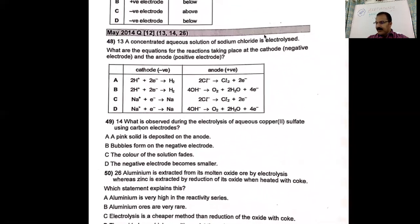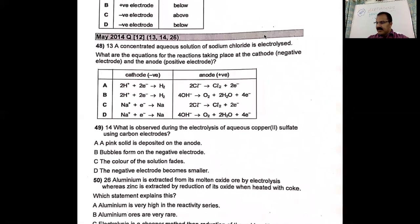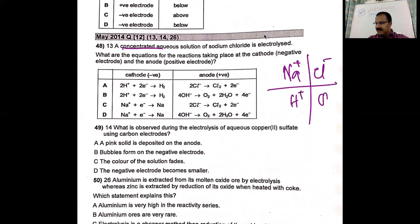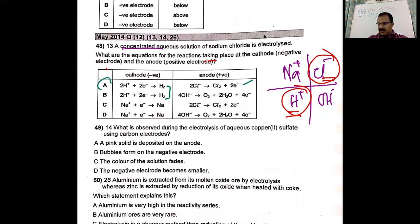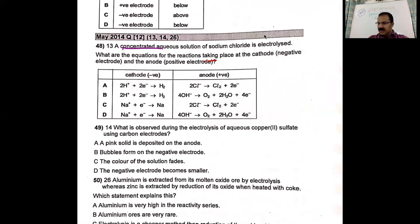Question 48: a concentrated aqueous solution of sodium chloride is electrolyzed. Na⁺, Cl⁻ from sodium chloride; H⁺ and OH⁻ from water. The selection at cathode is H⁺, and since it is concentrated, at the anode it is Cl⁻. Which equations represent the reactions at cathode and anode? The cathode equation involves H₂ and the anode equation involves Cl₂. There is only one option for Cl₂ at the anode. It helps to identify which ions are reacting.